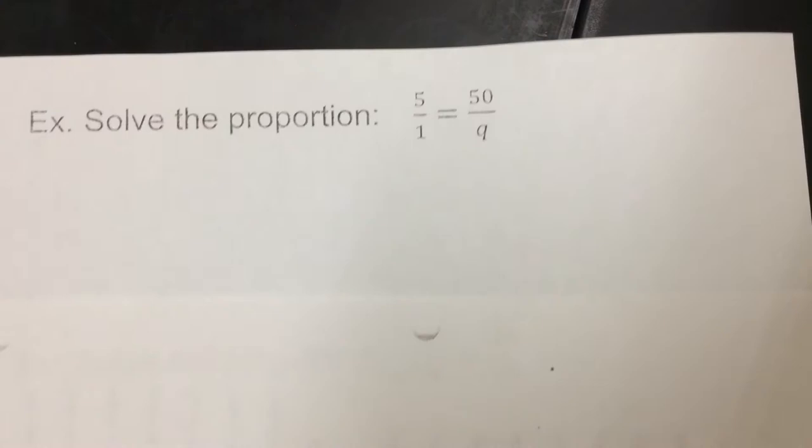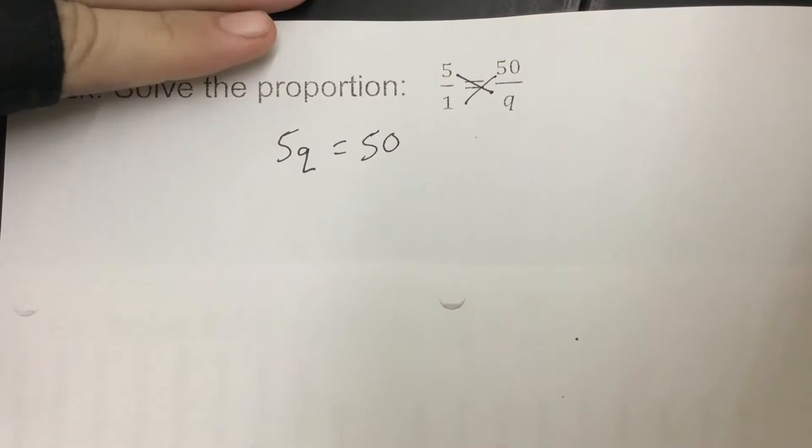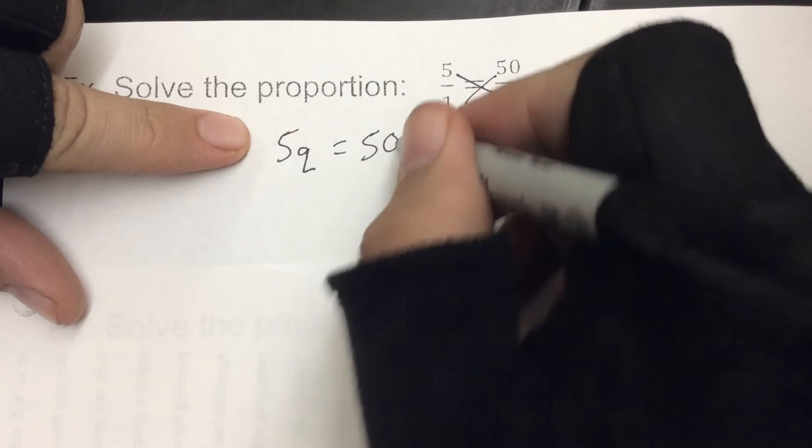So, in this proportion, if we do this, 5 times Q would be this cross, the other cross, 1 times 50. So, 5Q equals 50. So, how much would each Q be? Well, if we divided by 5, we'd get down to Q. So, if we divide this side by 5, we'd get Q equals 10.